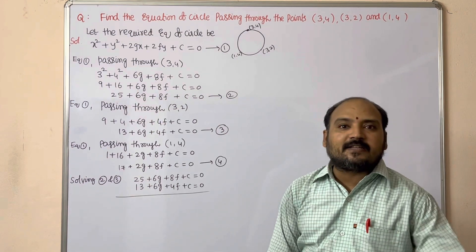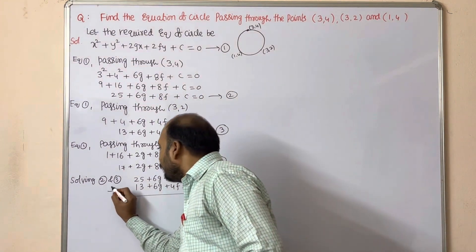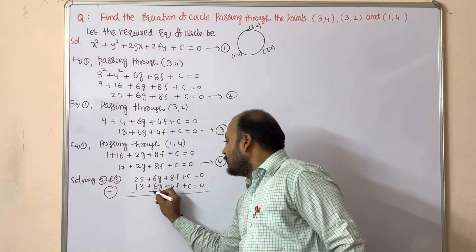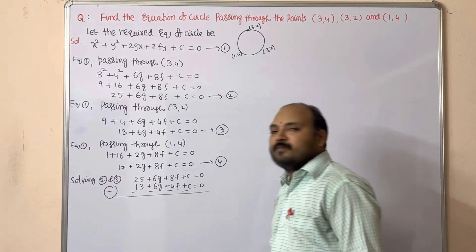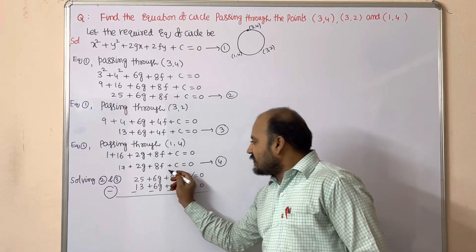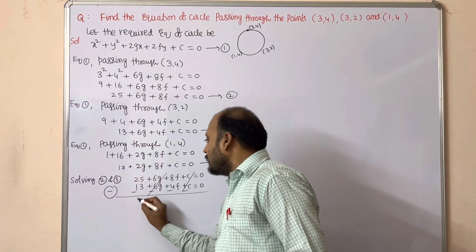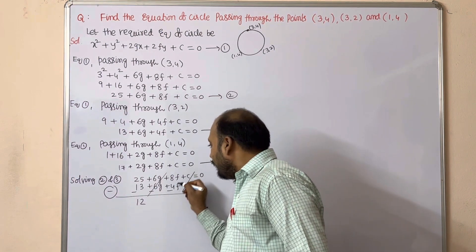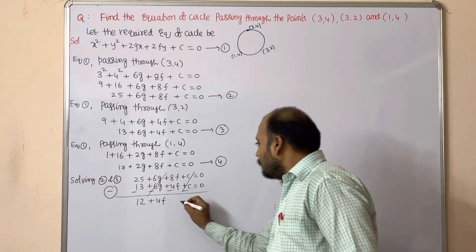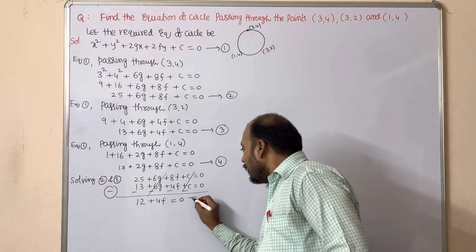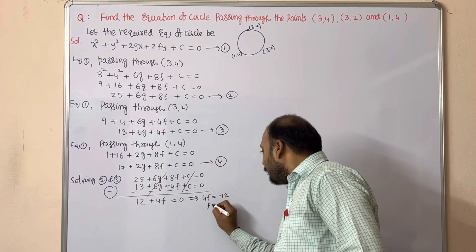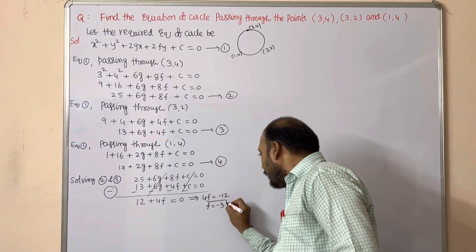We subtract Equation 3 from Equation 2. The c terms cancel, the 6g terms cancel, and we get 25 − 13 = 12 and 8f − 4f = 4f. So 12 + 4f = 0, which gives 4f = −12, therefore f = −3.